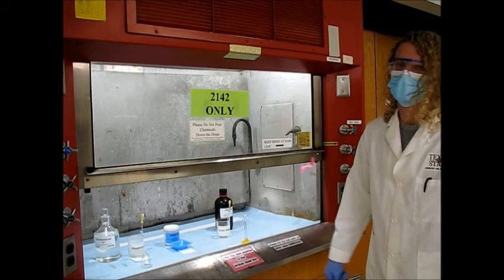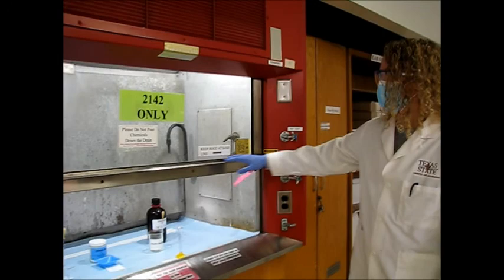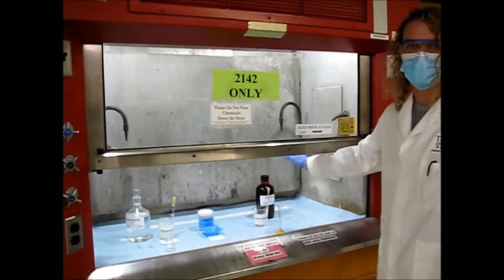So according to the procedure, we need to measure out these chemicals and add them together in the fume hood to prevent any toxic or corrosive fumes. So just a side note, we want to make sure that the hood is below the sash right here, just to make sure that it's actually venting properly.